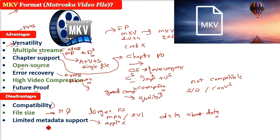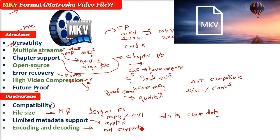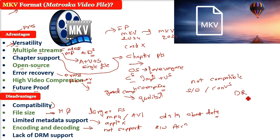Encoding and decoding is another disadvantage: some video editing software may not support MKV, requiring conversion before editing. Additionally, hardware support for encoding and decoding MKV files may not be as widely supported as other formats. There is also a lack of DRM support — digital rights management. MKV does not support DRM natively, which may limit its use for distributing copyrighted or protected content.